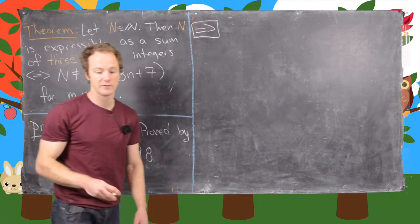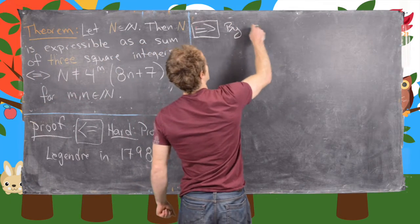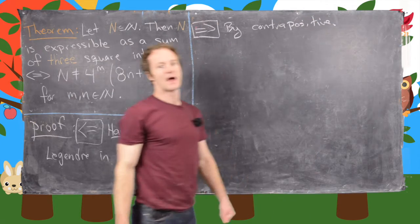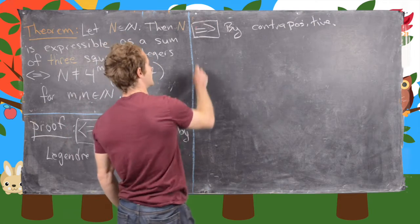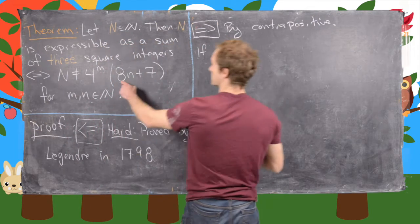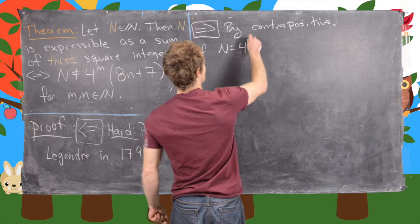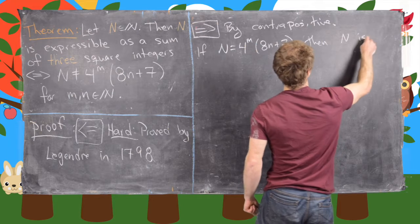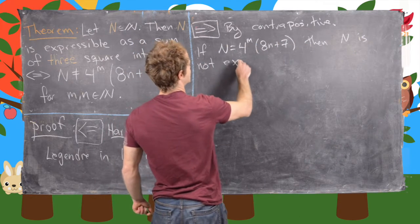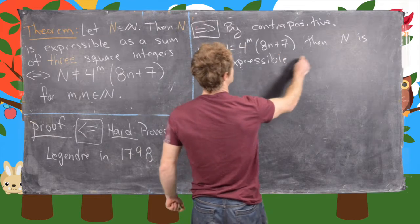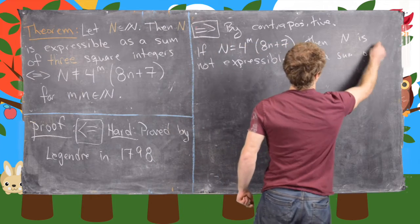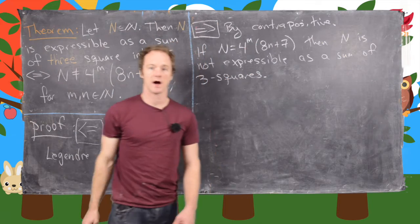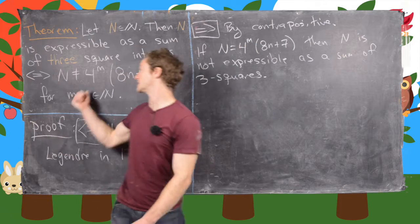We're going to prove it by the contrapositive. So by contrapositive, if n is of this form — if n equals 4^m times (8n + 7) — then n is not expressible as a sum of 3 squares. That's how we're going to do this direction of the proof.